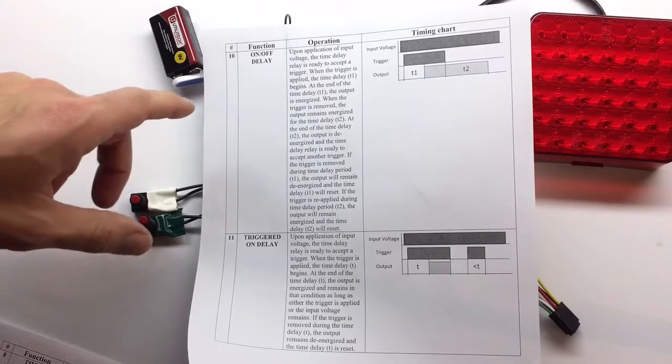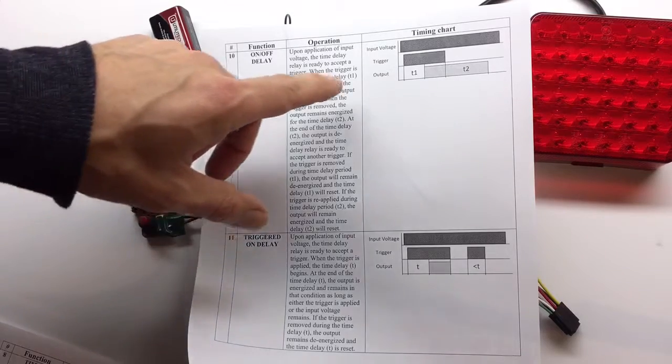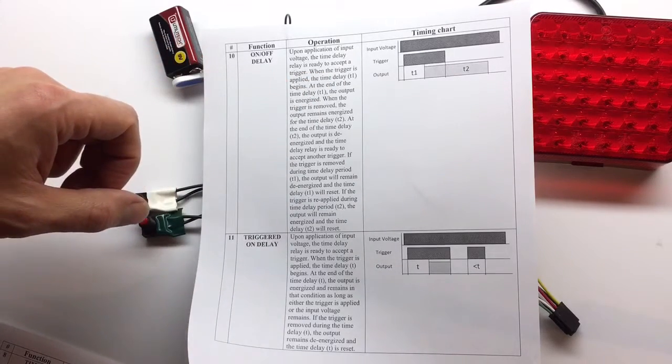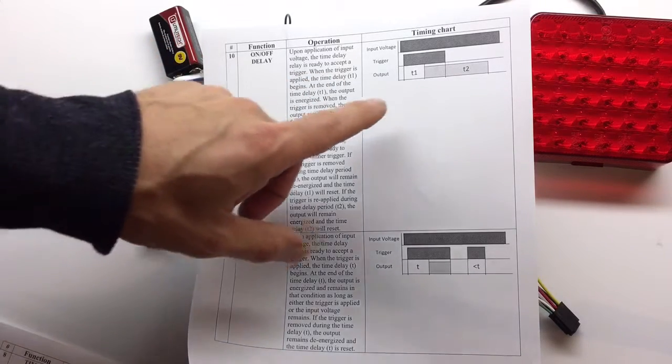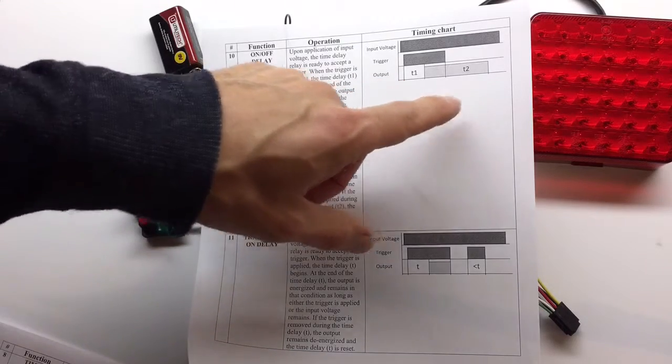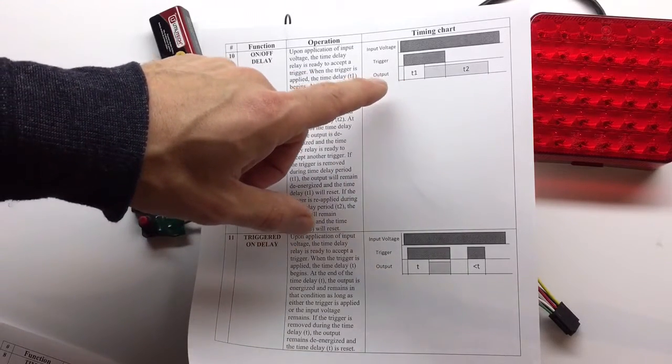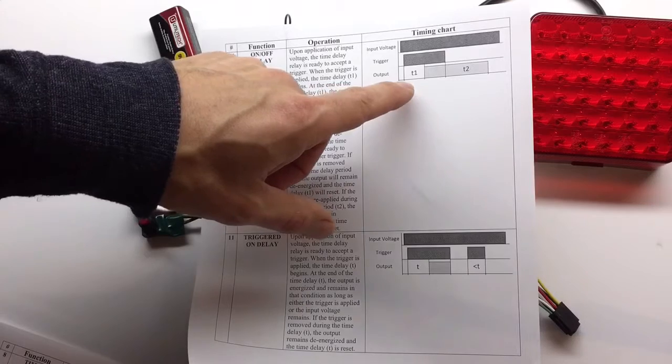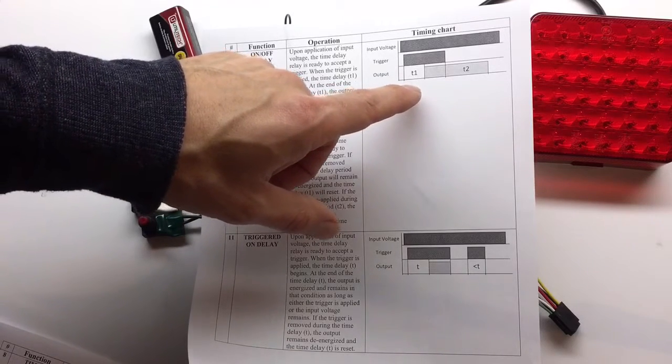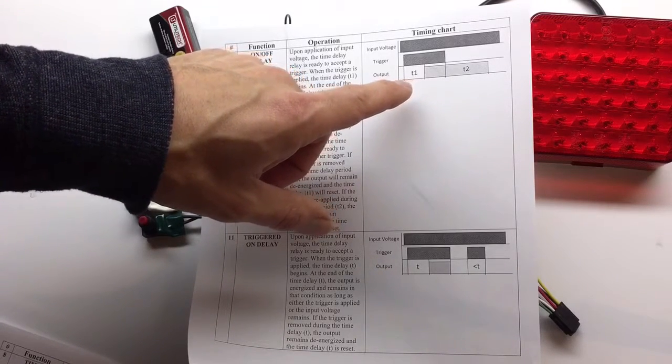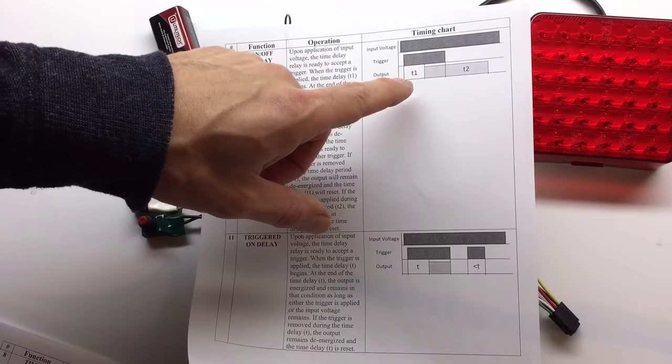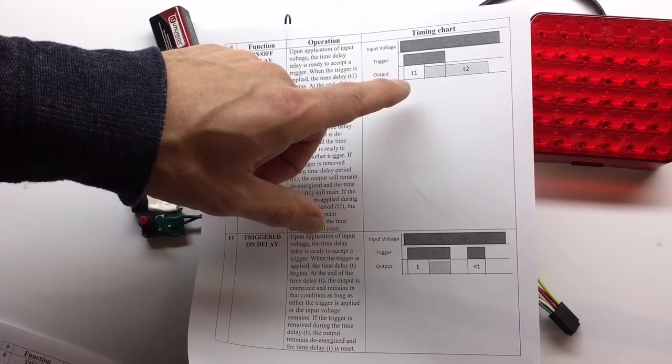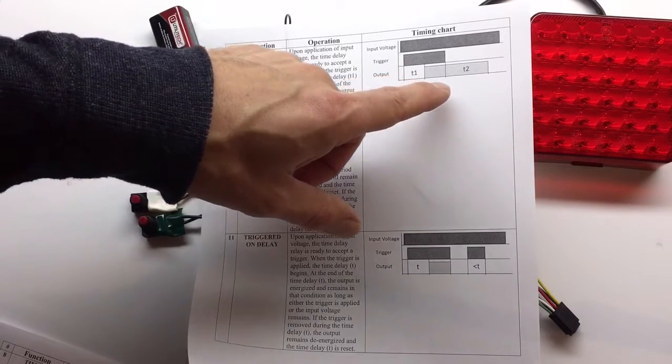Let's look at function number 10 and how to configure it. This one requires the trigger. We're going to configure T1 to one second and T2 to two seconds. What that means is when we apply the trigger, the light will not come on for one second, and then as long as we're holding the trigger, the light will continue to be on.